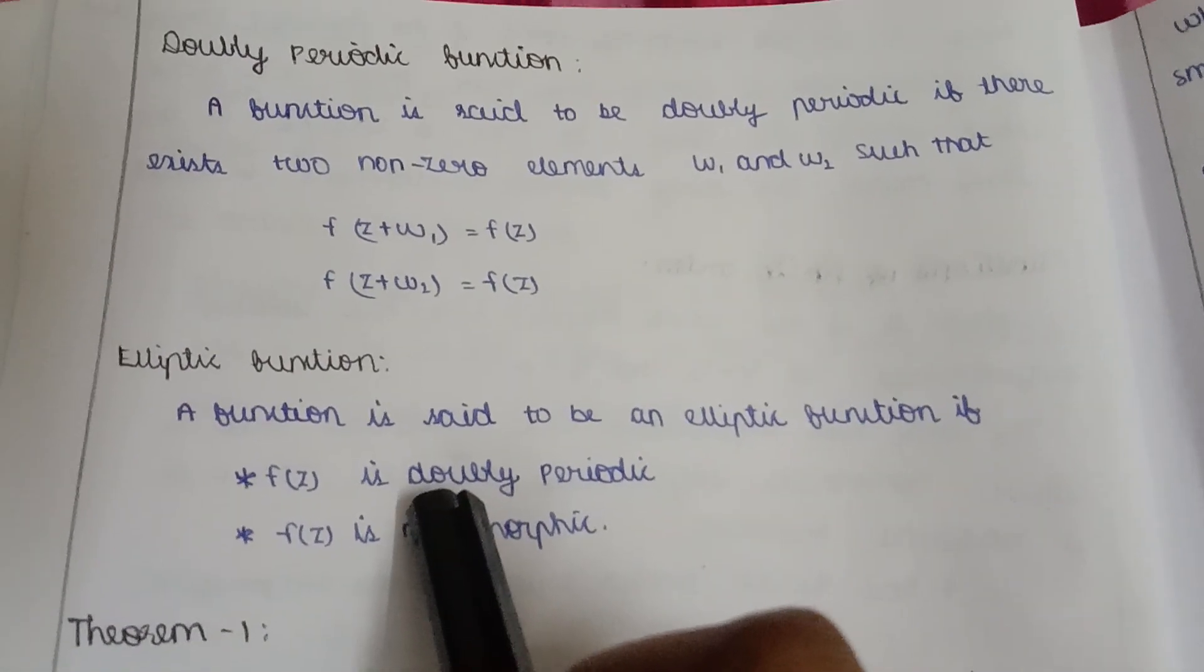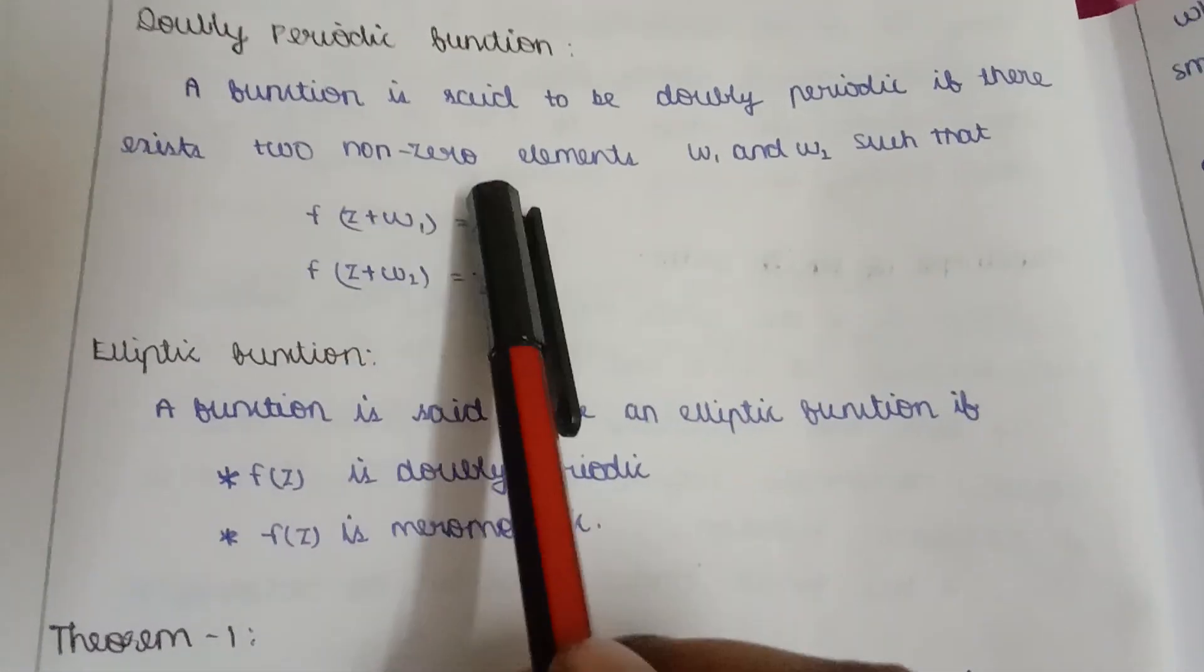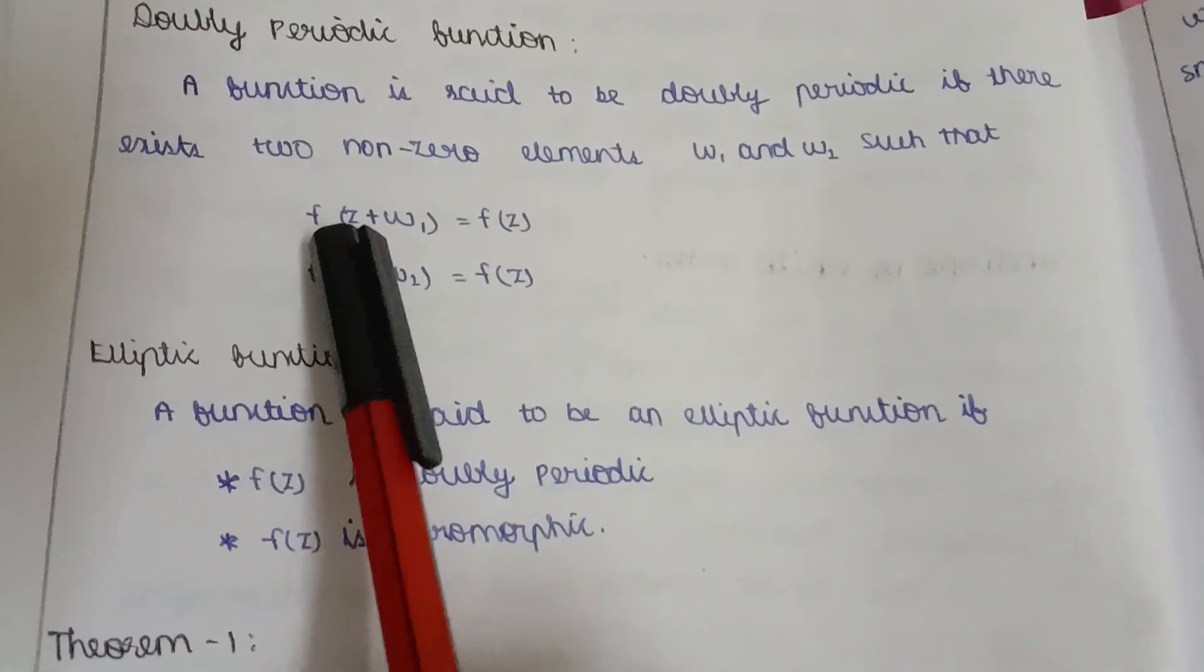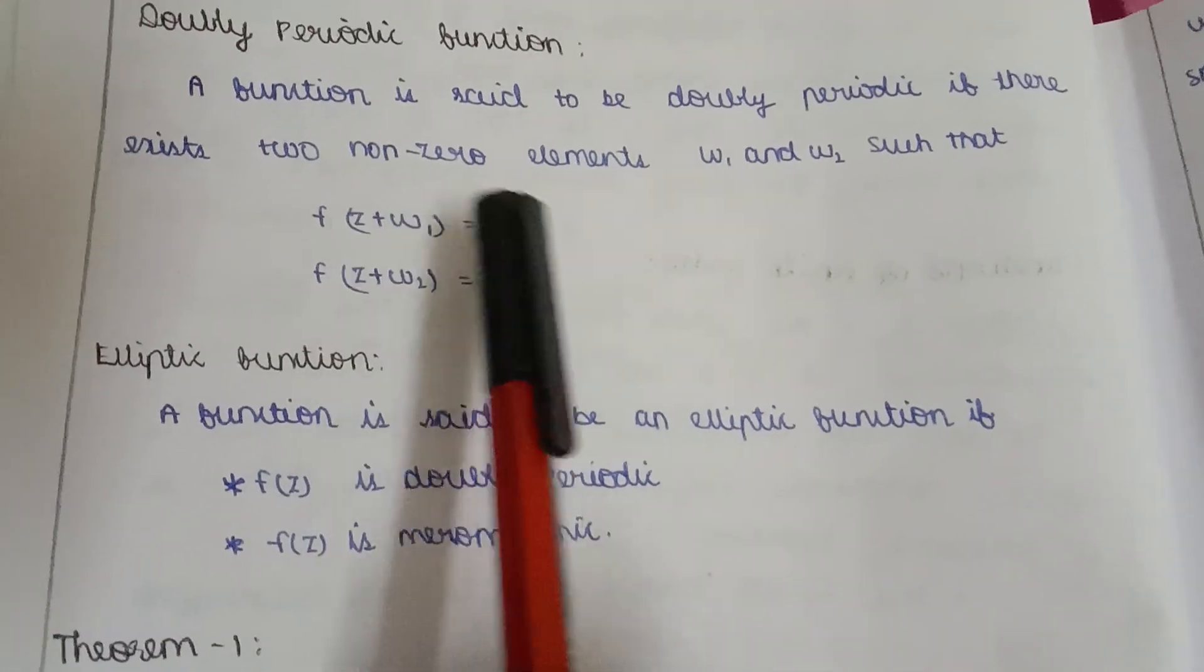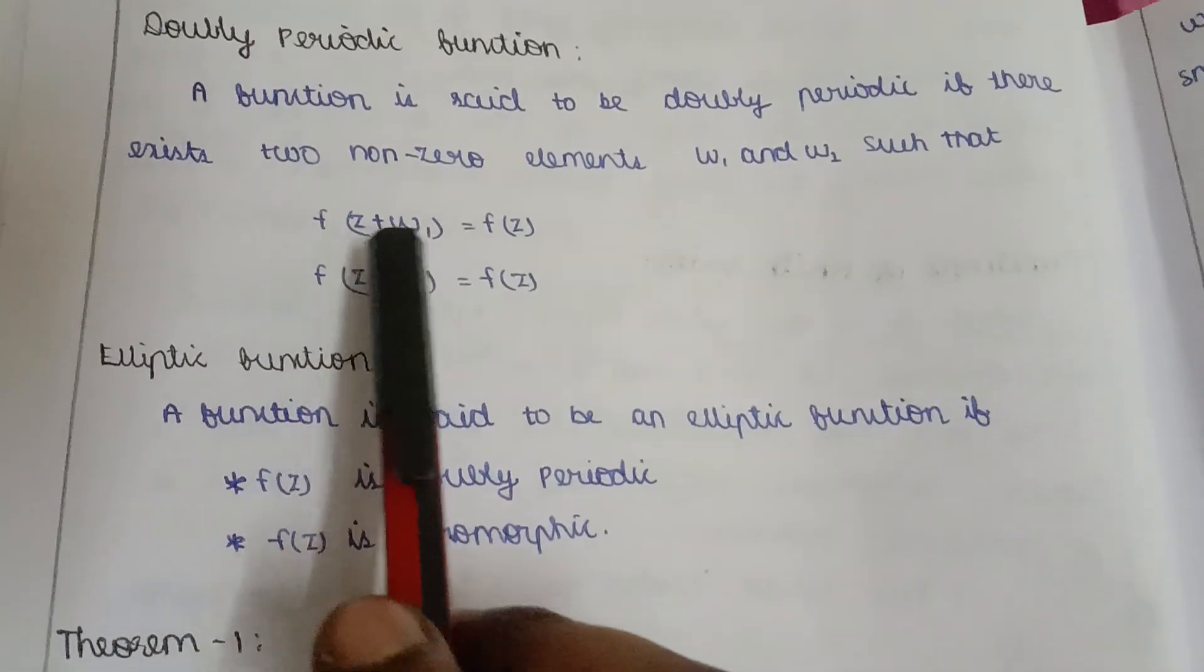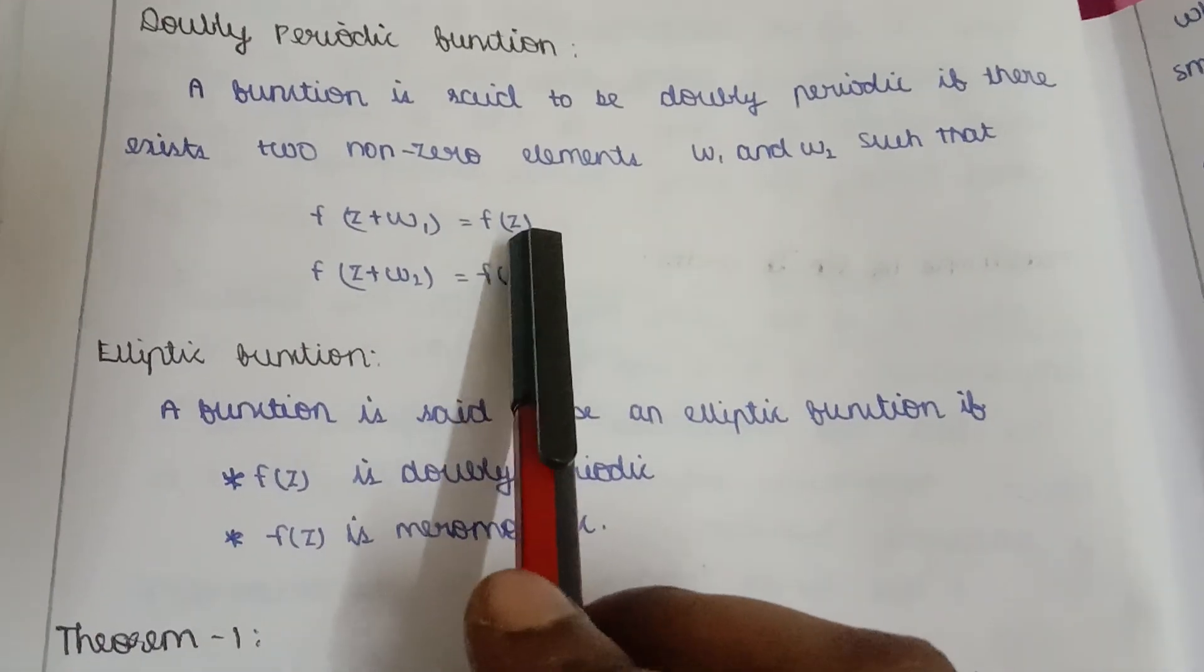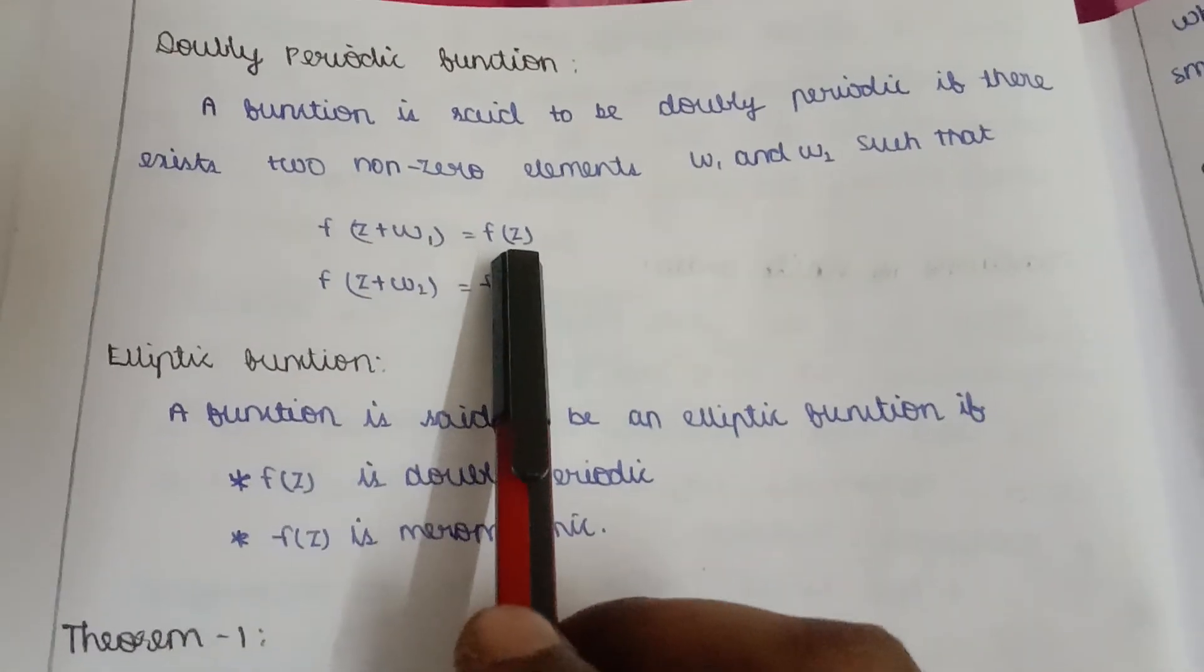Before that we need to know about what is doubly periodic. Doubly periodic means nothing but there exists two non-zero elements. If we have one function, we have another one element means it will give the same function as it is, f of z. So if we have a function that is f of z, if we add some element it will again give f of z.